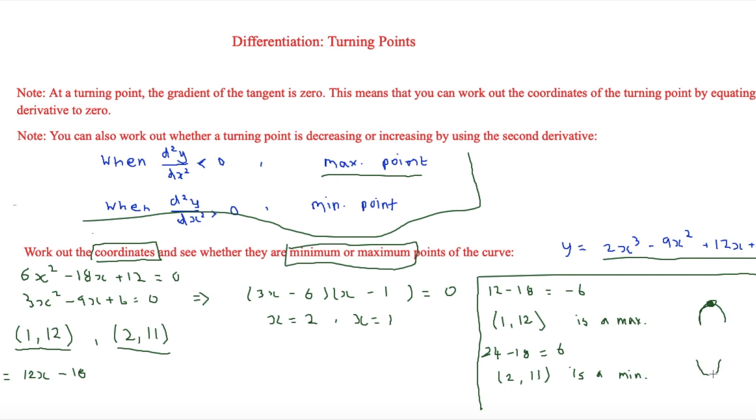And there we are. That would look a little bit like that. So that is how you do it. You work out the coordinates by equating it to 0 and then using the second derivative to work out the minimum or the maximum point of a curve. So thank you for watching this video and see you soon. Bye.